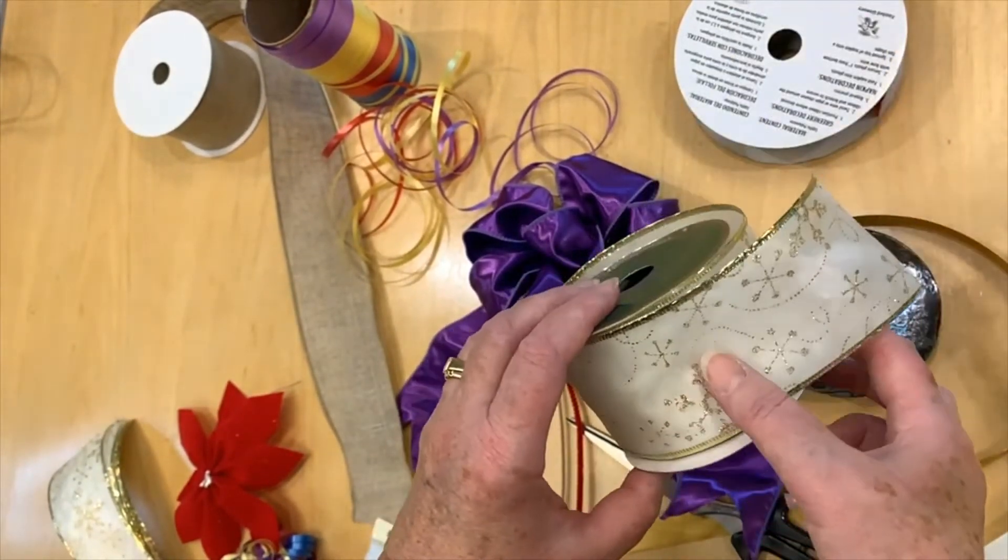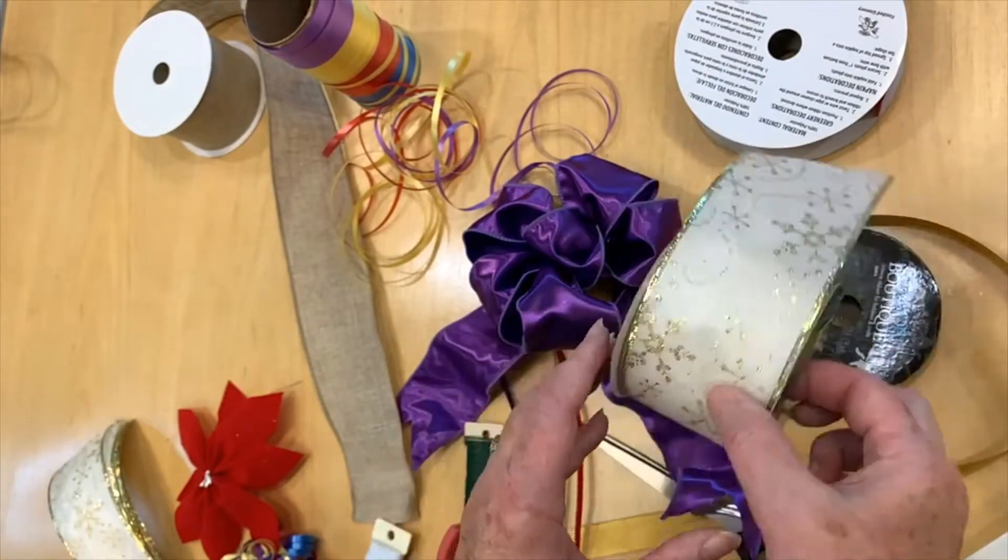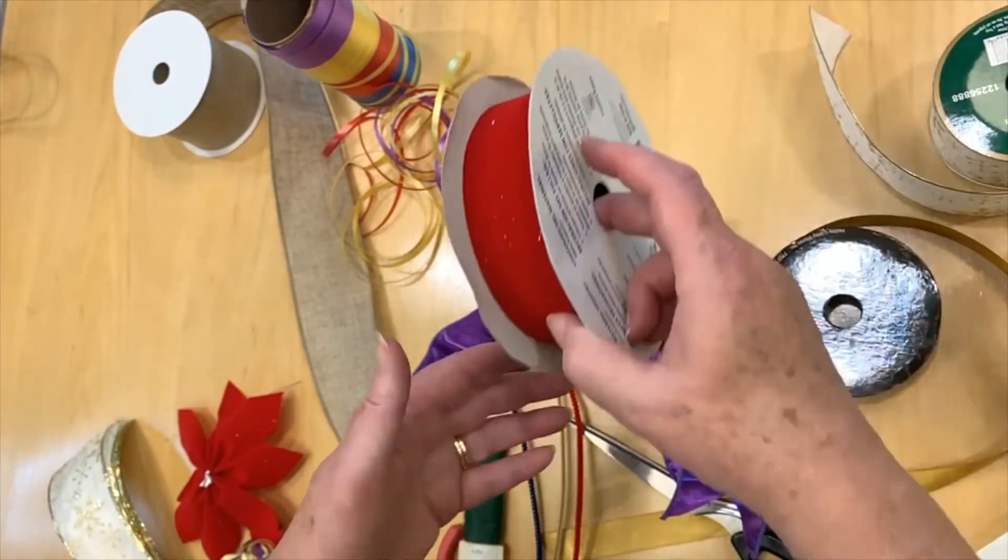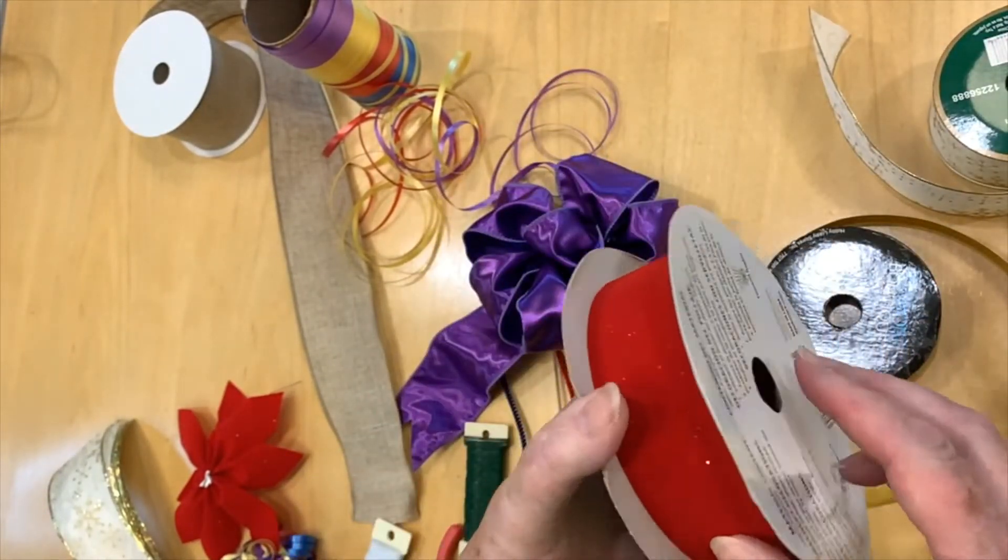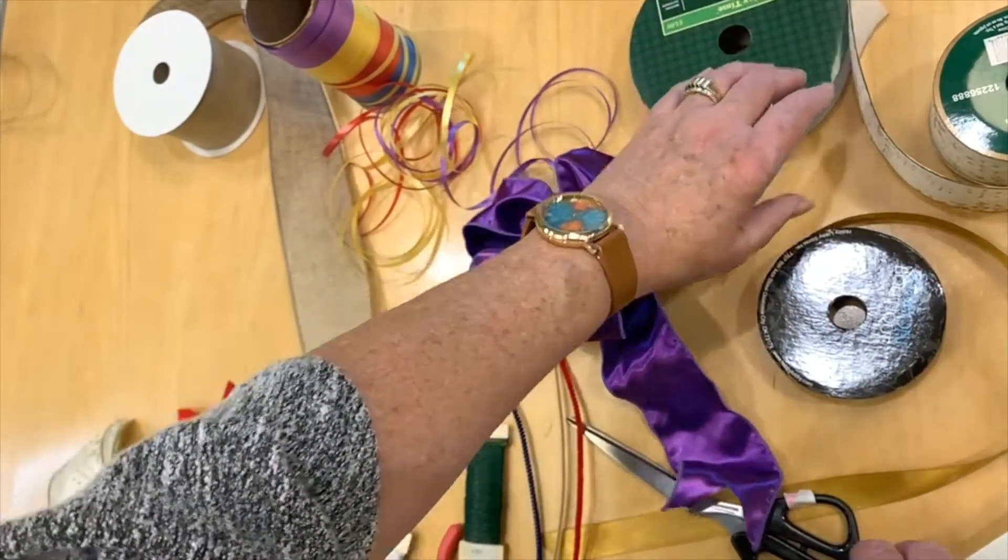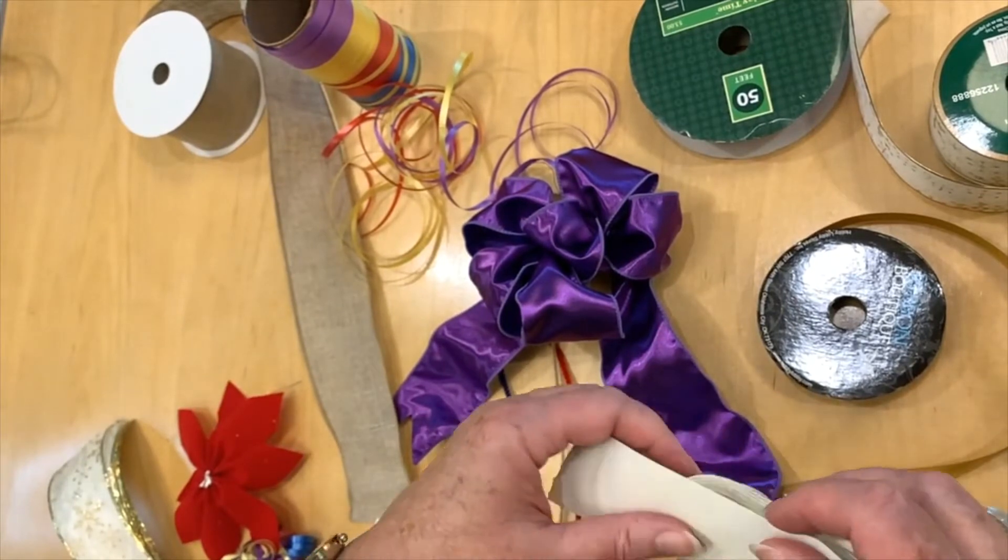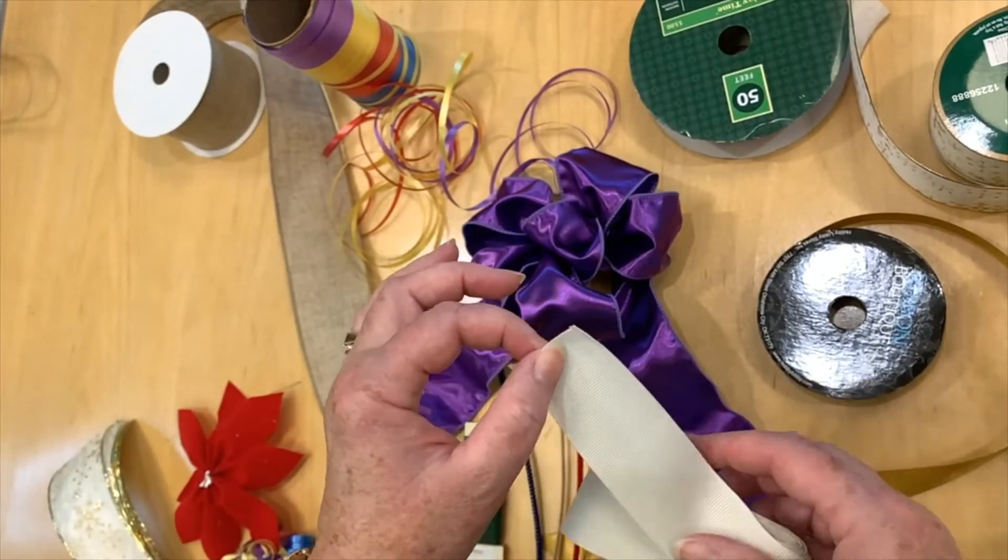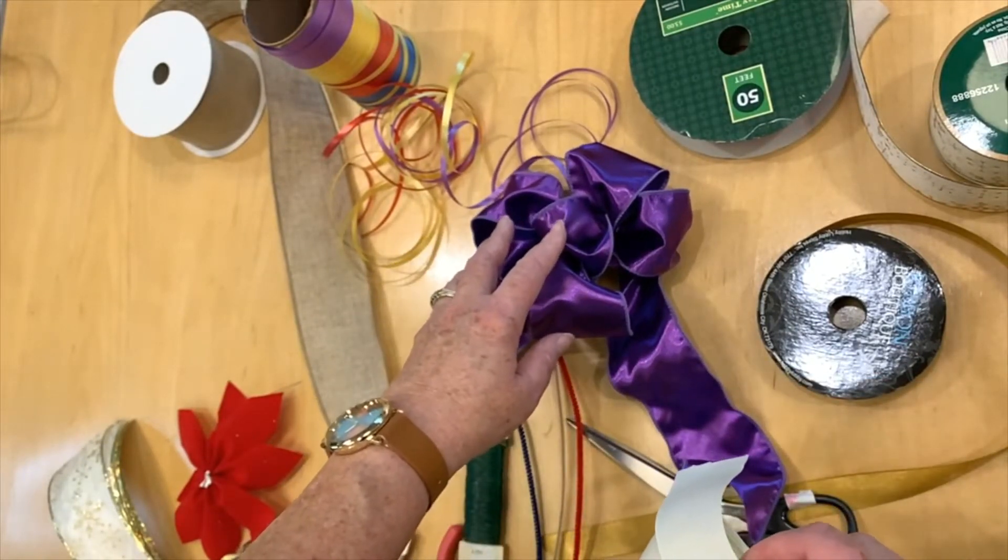That's where your wire ribbon comes in real handy even the one I showed you before. This one's got some body to it. It will stay in place but the fabric ribbons they're lovely for certain things but not say for a puffy bow.